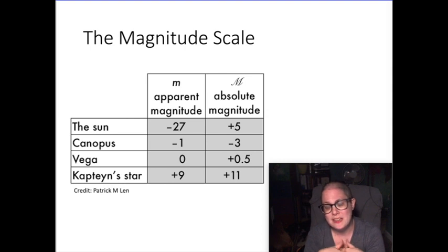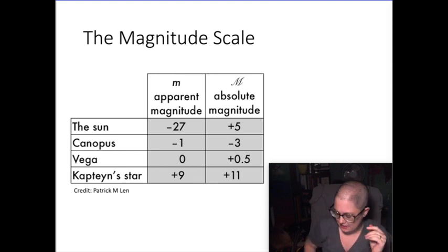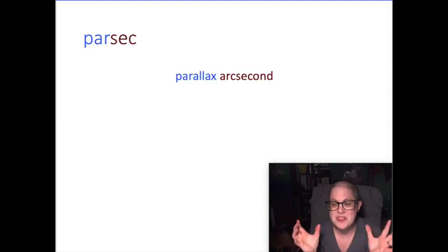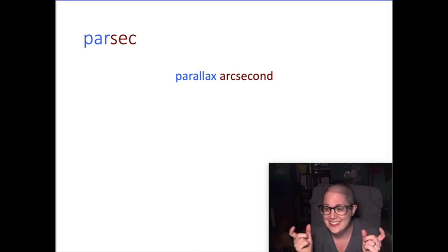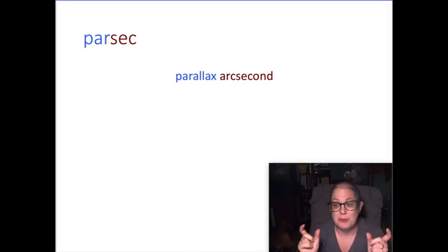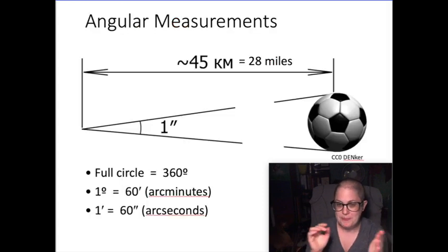I mentioned a distance that was 10 parsecs. Parsec is a unit of distance. The word comes from like a mishmash of two words, parallax and arc second. We're going to talk about what those two things are. Parsec is a measure of distance, despite what Han Solo tells you, and arc second is a measure of angle.